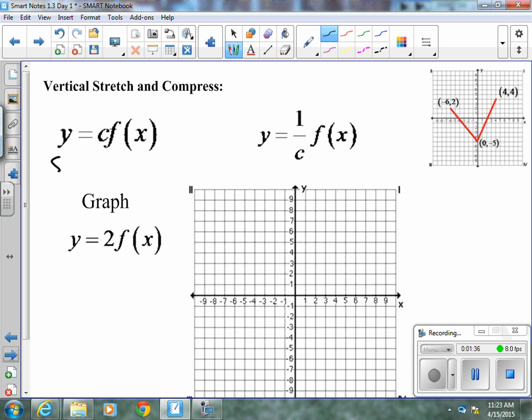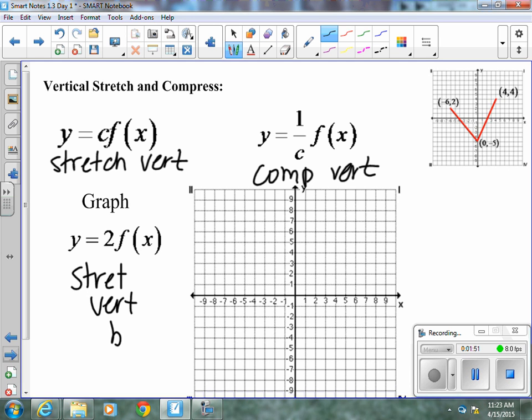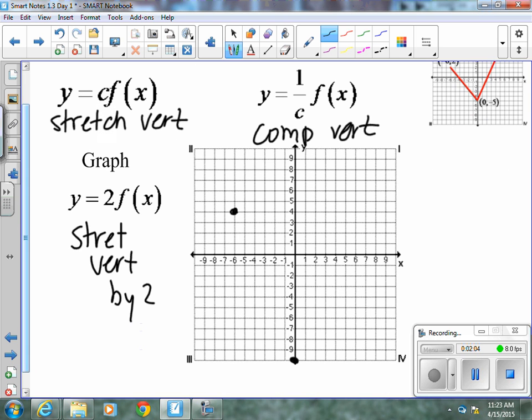Stretch and compress. This stretches vertically, where this one compresses vertically. So this is going to stretch vertically by 2, meaning we're going to multiply our y values by 2, so instead of (-6, 2), it's going to be (-6, 4). Instead of (0, -5), it's going to be (0, -10), and instead of (4, 4), it will be (4, 8). All those y values multiplied by 2.